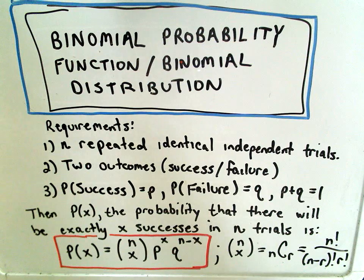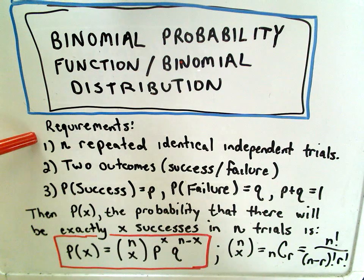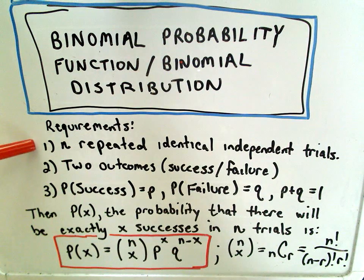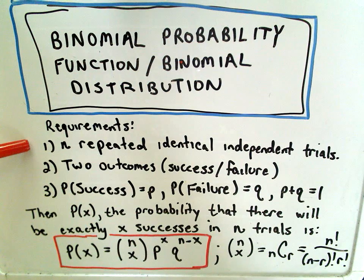To use a binomial distribution, we have to have a few requirements met. What we're going to do is we're going to have n repeated identical independent trials.